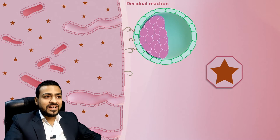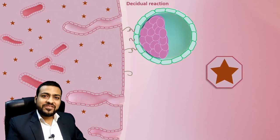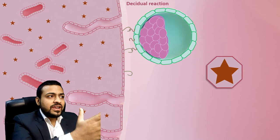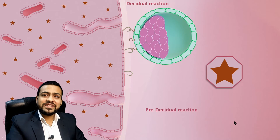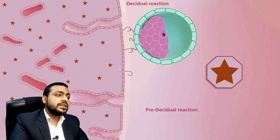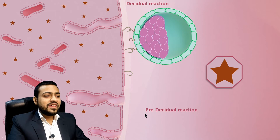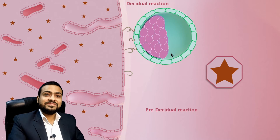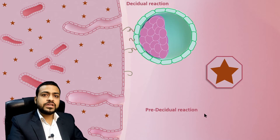Some embryologists have really ended this debate. What they say is that during each month in the mid-secretory phase of the menstrual cycle, the decidual-like changes that occur should be called pre-decidual reaction, and if the embryo comes and tries to implant in the endometrium, then it really is decidual reaction. So pre-decidual reaction occurs each month, but decidual reaction only occurs when an embryo tries to implant itself into the endometrium. I will share references to books that discuss pre-decidual reaction in the description.